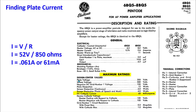Looking at a GE spec sheet for the 6BQ5 — we measured 61 milliamps — we can check if we're running the amplifier too hot or taxing the tube too much. Under maximum ratings, the DC cathode current — measured at steady state with no music or audio flowing through the amplifier — is listed as 65 milliamps maximum. At 61 milliamps we're a few percent below that; it's a little on the hot side but certainly not beyond what this tube is rated for.